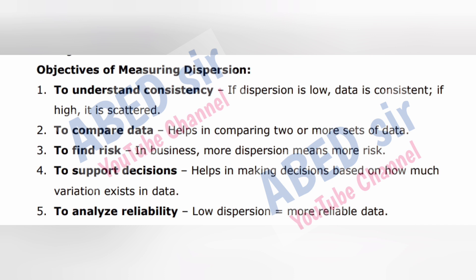1. To understand consistency: if dispersion is low, data is consistent; if high, it is scattered. 2. To compare data: helps in comparing two or more sets of data. 3. To find risk: in business, more dispersion means more risk. 4. To support decisions: helps in making decisions based on how much variation exists in data. 5. To analyze reliability: low dispersion equals more reliable data.